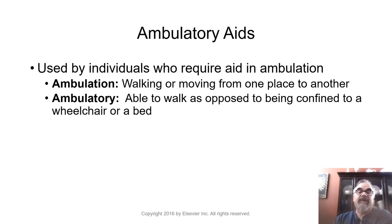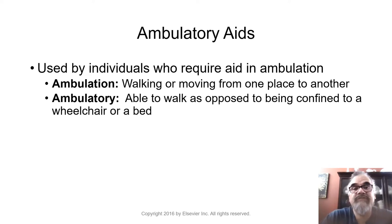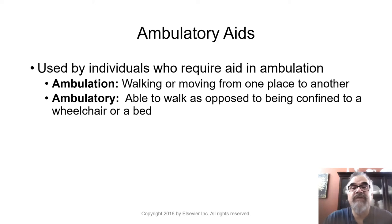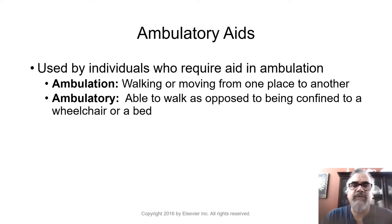Now let's talk about ambulatory aids — tools and equipment that help as an aid in ambulation. Ambulation means to walk, to be able to walk. When a patient is ambulatory it means they can walk; non-ambulatory means they cannot walk. We also have weight bearing, partial weight bearing, and non-weight bearing. Weight bearing means you can stand up and support your weight with your legs. Partial weight bearing would be like having a broken right foot and standing only on your left foot. Non-weight bearing means you cannot put weight on either foot — you'll be in bed or a wheelchair most of the time.